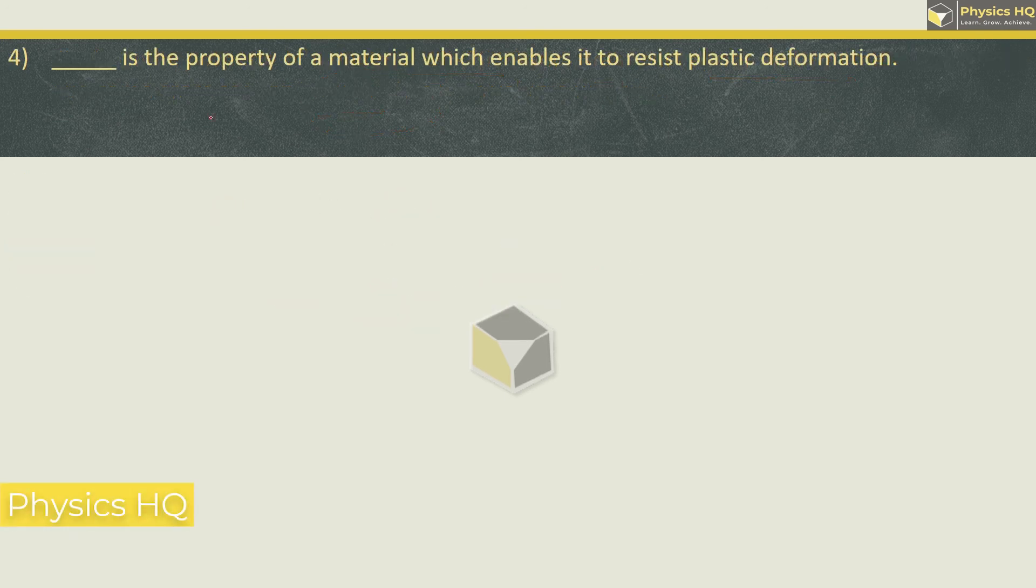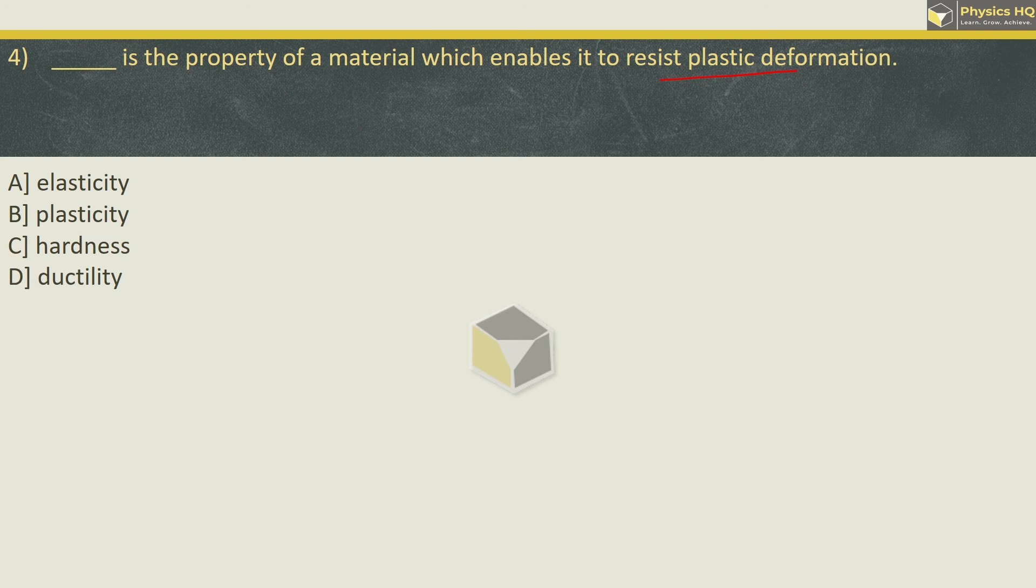Next, what is the property of a material which enables it to resist plastic deformation? These are the options. The correct option over here is option C, hardness. Hardness is the property which enables a material to resist plastic deformation.